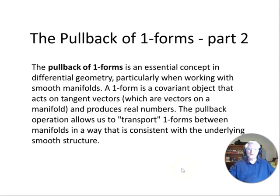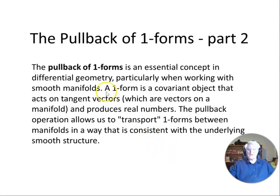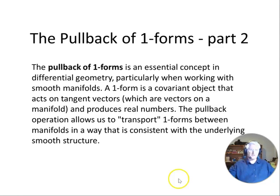Hello and welcome to this video, the second in the pullback of one-forms series. This video will focus mainly on some examples after first covering a couple of extra concepts. The pullback of one-forms is an essential concept in differential geometry, particularly when working with smooth manifolds. A one-form is a covariant object that acts on tangent vectors and produces real numbers. The pullback operation allows us to transport one-forms between manifolds in a way that is consistent with the underlying smooth structure.